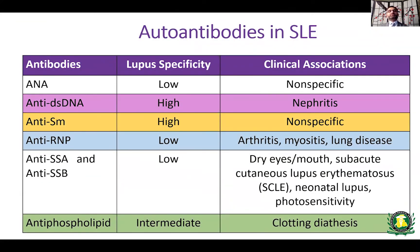ANA is not the only antibody present in lupus. There are other autoantibodies. The next in line is anti-double-stranded DNA, which is a very highly specific antibody — meaning if somebody has anti-double-stranded DNA, there is close to a 95% chance they have lupus. However, the sensitivity of anti-double-stranded DNA is low, meaning some patients with lupus may have a negative result. Another antibody is anti-Sm, which is again highly specific for lupus but with low sensitivity. Additionally, anti-RNP, anti-SSA, anti-SSB, and antiphospholipid antibodies can also be present in lupus patients.